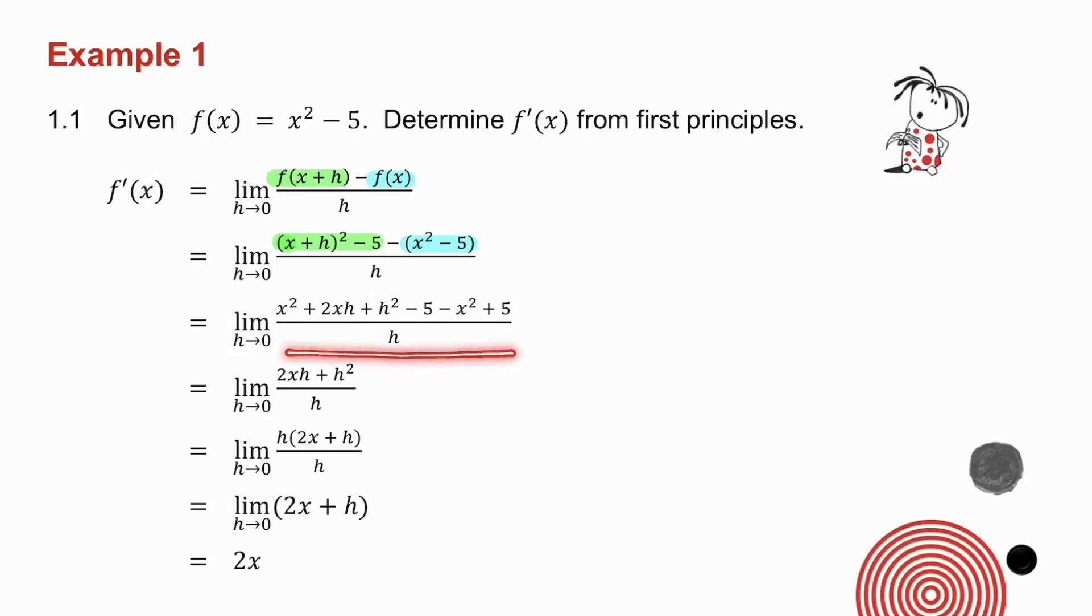Multiply the brackets out, simplify, take out a common factor of h, the h's cancel, and as I make h tend to 0, my answer is equal to 2x. Now it's very easy to check your answer now that we know the rules with derivatives, but if it says to you from first principles you have to do it in this method. Check your answer certainly, but it has to be done this way.